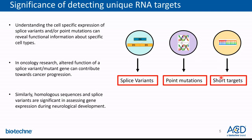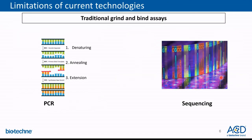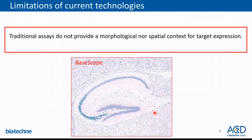These unique probes are designed against very specific short sequences on the target of interest. Some traditional techniques such as PCR or DNA/RNA sequencing can reveal information about specific permutations and transcripts, but you lose the spatial information. By using BASCOPE, you can achieve highly specific and sensitive detection of target genes while retaining the morphological context.